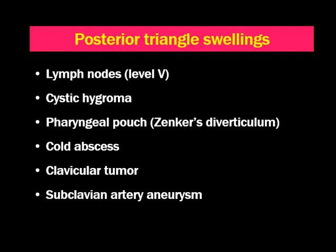Pharyngeal pouch or Zenker's diverticulum may present in the lateral neck in the posterior triangle. Cold abscess, vascular tumors, and occasionally subclavian artery aneurysm also may present in the posterior triangle. It is important to note that the most common swelling in the neck is the neck node — it may be level 1b, level 2, level 3, level 4, or level 5 in the lateral neck. So you should know how to examine the neck nodes in your clinical examination.